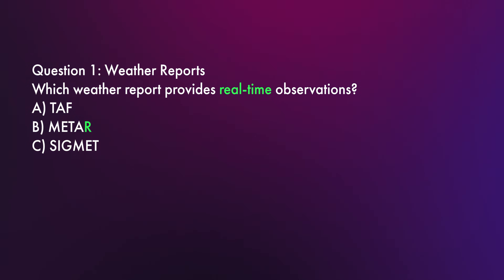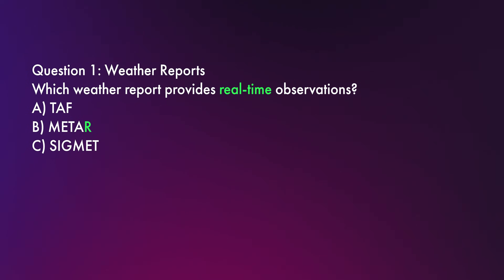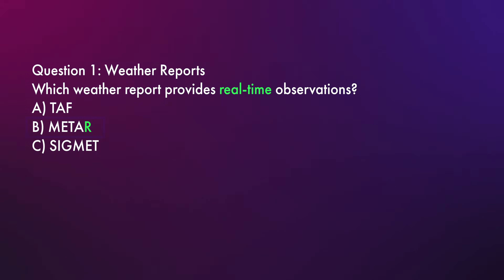So just remember: TAF is for forecasting weather conditions, where METAR is for understanding weather conditions in real time. Our question asks about conditions in real time, so we know that's METAR and not TAF. And just to rule out SIGMET as well — SIGMET focuses on hazardous weather conditions like turbulence or thunderstorms, and it doesn't provide detailed real-time data.